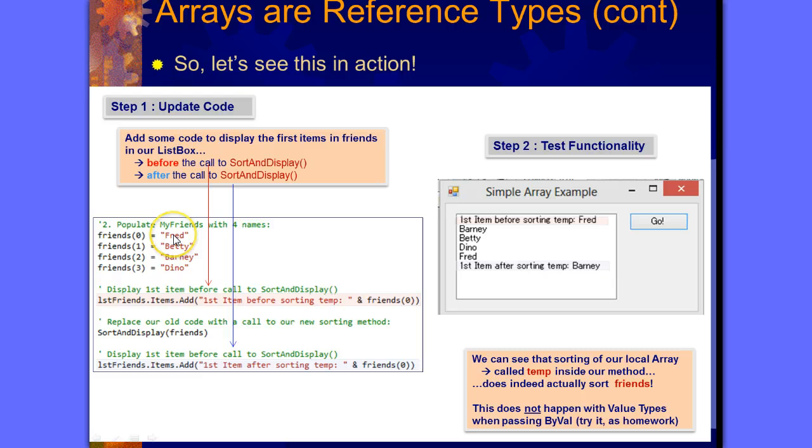Before we do that, the first element, the zeroth element, is Fred. Then we're going to apply our sort and display, which sorts it and displays everything in it. When we sort it, instead of Fred being first, Barney is going to be first. So it goes Barney, Betty, Dino, Fred, because we're displaying it after sorting it.